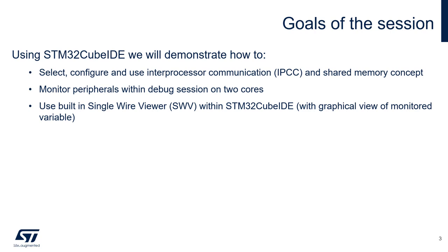I will monitor peripherals within a debug session using the project running on two cores. By using a built-in single-wire viewer with STM32Cube IDE, we will monitor in a graphical way some variables modified by both cores. Before this, I will spend a while on discussion about theoretical points related to the Interprocessor Communication Controller.